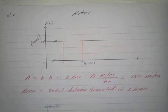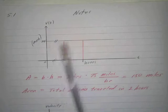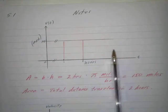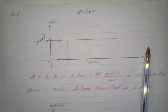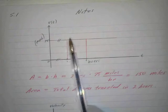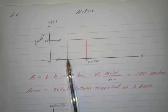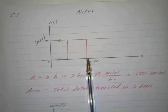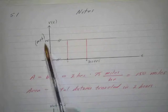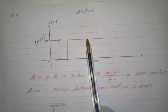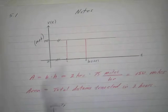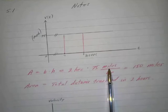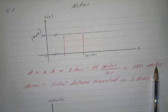We're going at constant velocity. If we look at the velocity graph, this is my constant velocity. Between 7 and 9, I'm going at a constant velocity of 75 miles per hour. If we look at the area of this rectangle, the height would be 75, this position would be 7 hours, and this would be 9 hours. The length of this rectangle is 9 minus 7, which is 2, and the height is 75. If we multiply the base times the height — the area — we get 2 hours times 75 miles per hour, which gives us 150 miles. That's the distance traveled.